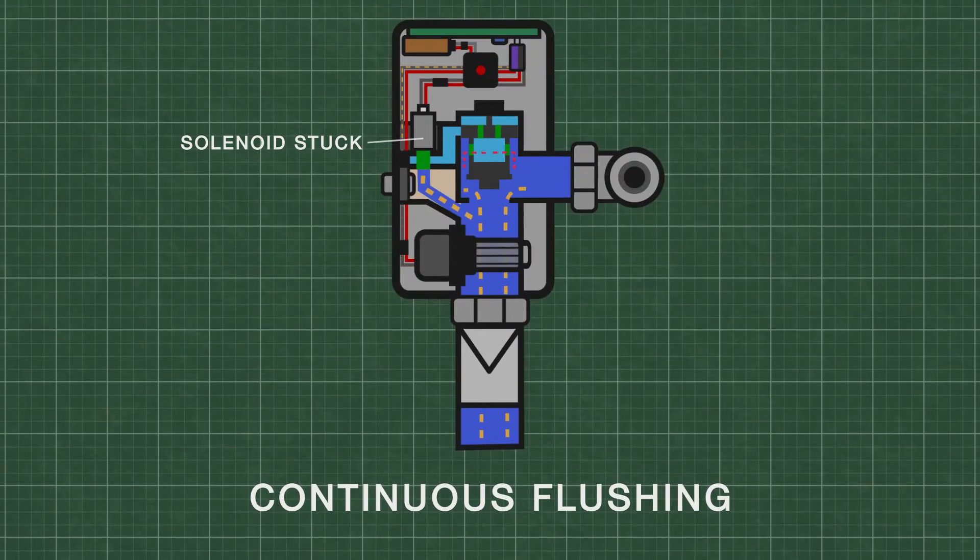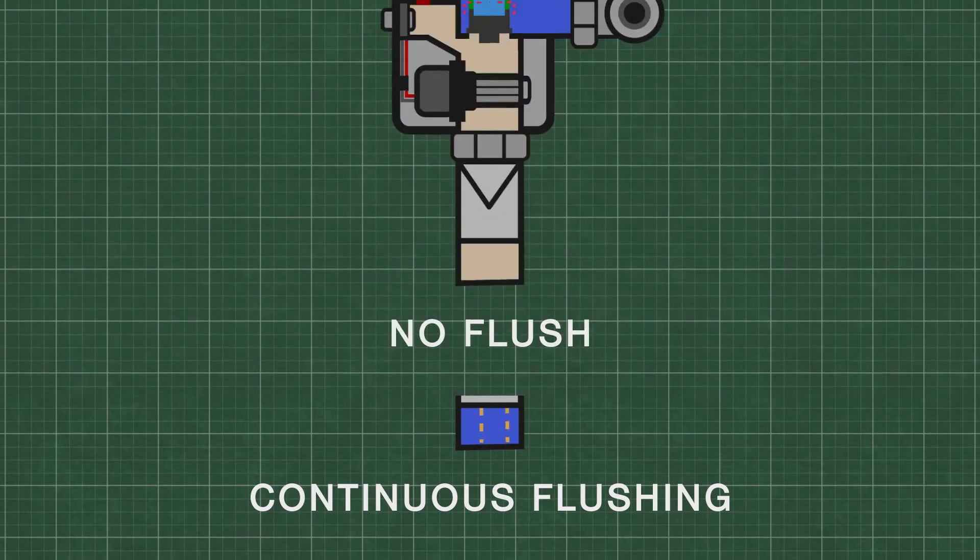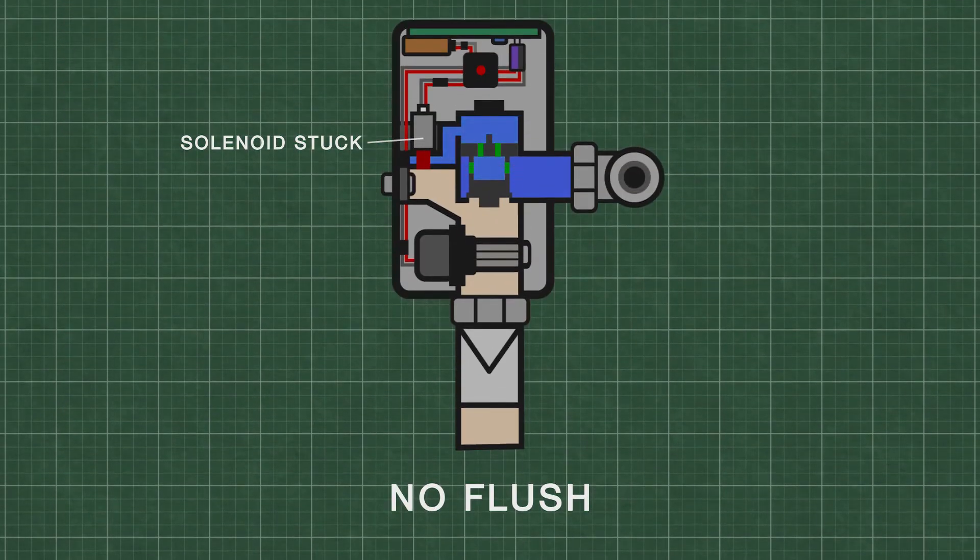If the solenoid is stuck open, it can cause continuous flushing as water continues to flow out and prevents the upper chamber from filling with water. If the solenoid fails to open, it can prevent the unit from functioning at all.